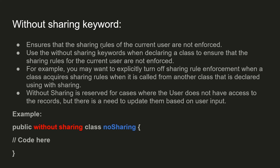Without sharing ensures that the sharing rules of the current user are not enforced — it runs in system context, like triggers. Use the without sharing keyword when declaring a class to ensure sharing rules are not enforced. For example, you may want to explicitly turn off sharing rule enforcement when a class is called from another class that is declared using with sharing. Without sharing is reserved for cases when the user does not have access to the records but there is a need to update them based on user input.